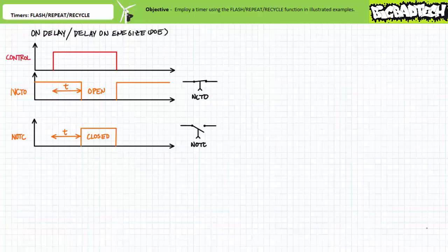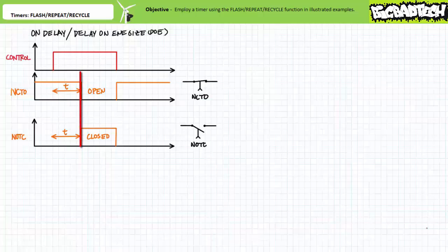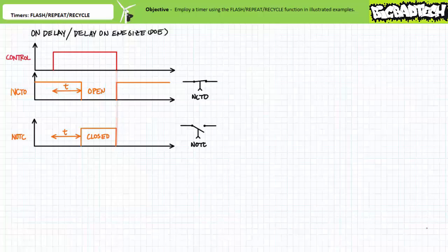A timing diagram of a timer executing the on-delay or delay on-energize function would look like this. When the controlling input is energized, the associated contacts do not instantaneously switch to their opposite state. The normally closed time-open contact remains closed and the normally open time-closed contact remains open. Only after the predetermined delay period T has elapsed do the contacts change states. The normally closed time-open contact opens, and the normally open time-closed contact closes. When the controlling input is de-energized, the associated contacts quasi-instantaneously revert to their normal deactivated state. The on-delay timer could be used to turn another motor on a measurable time period after another has started.